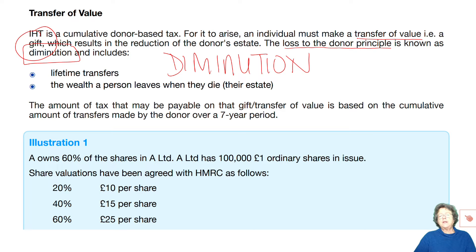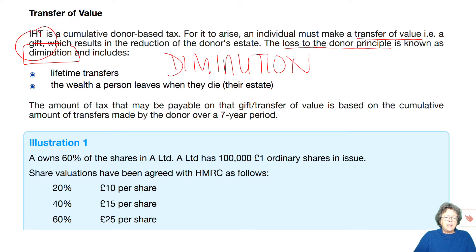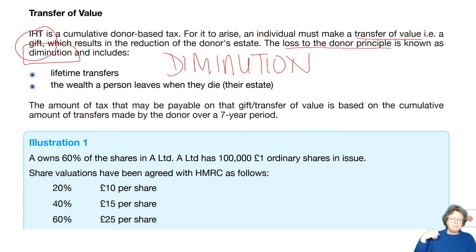This can happen either during your lifetime, or it can happen when you die, and it will come from your estate — the value of all the assets that you own. The amount of tax that may be payable on the gift or the transfer is based on the amount that you've made in the last seven years going back. That's the principle of inheritance tax.